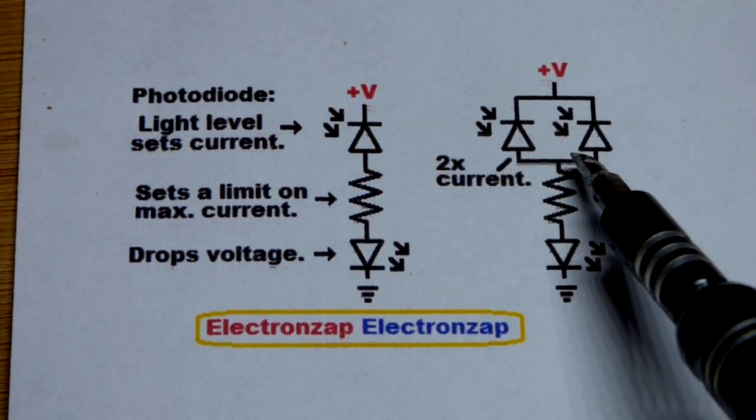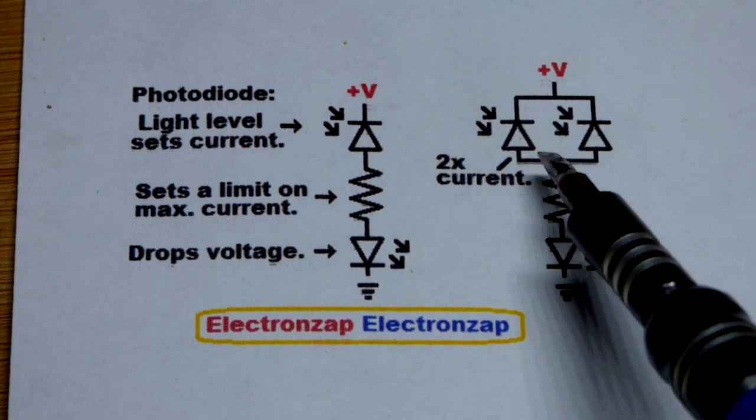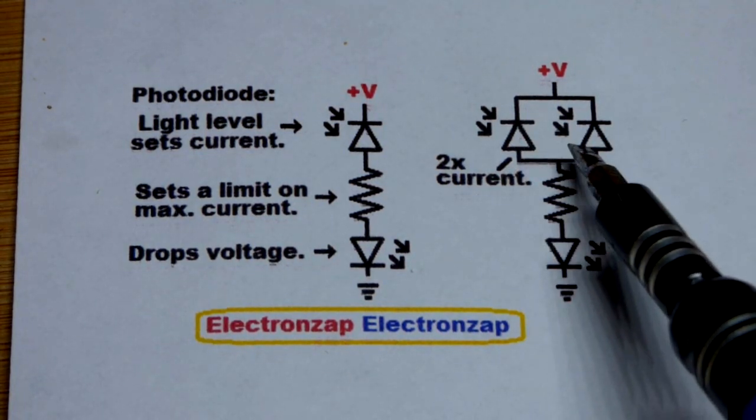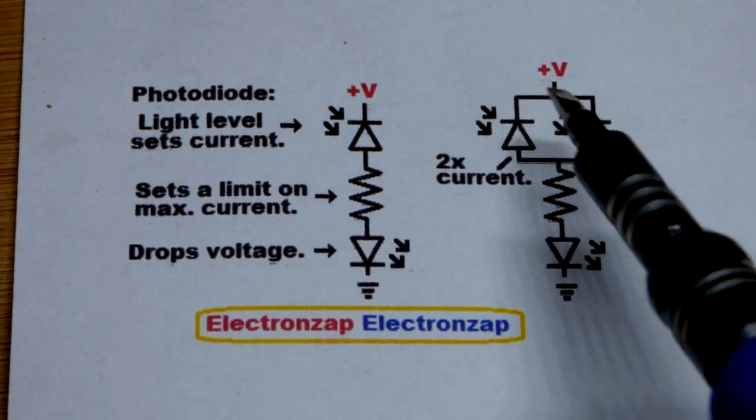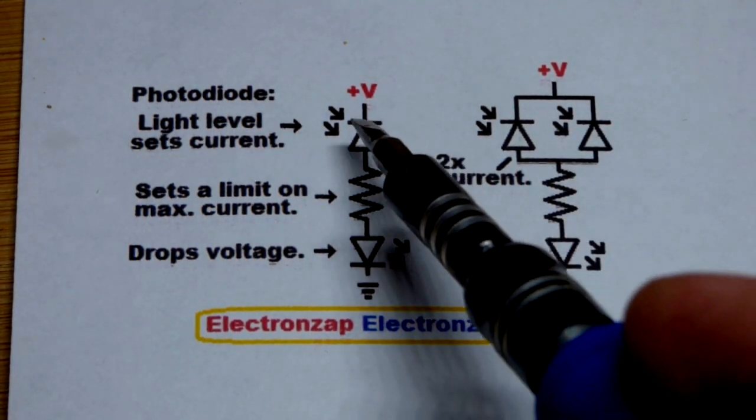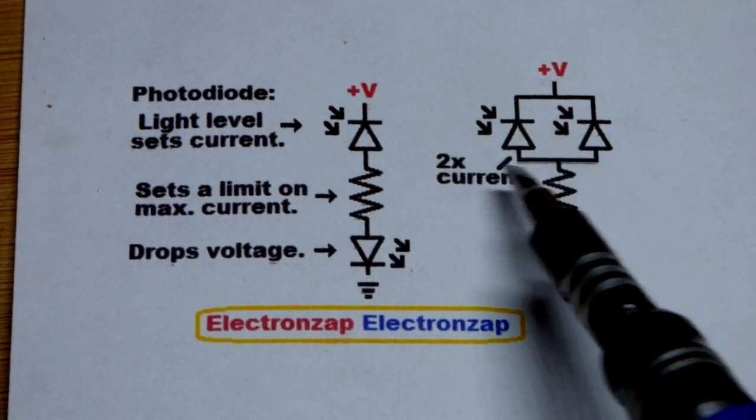So they're not going to pass the same amount of current because if they're facing different directions or something they'll get a different amount of light. But in any case for the same amount of light you'll get two times the amount of current as a single photodiode if you have two of them.